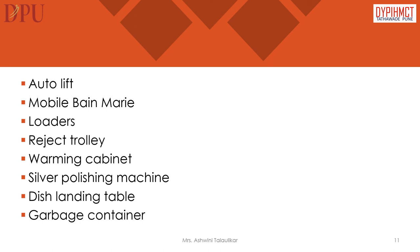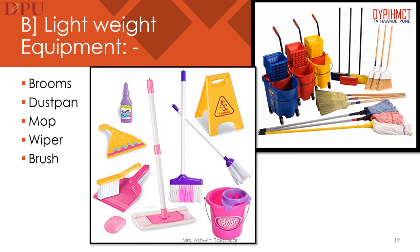Temperature for sterilization of cutlery and crockery is 170°C to 180°C. Door type dishwasher can handle 810 to 1875 dishes per hour. A single tank conveyor can handle 4500 to 5650 dishes per hour. A double tank conveyor can handle 8500 to 12000 dishes per hour. A flight type dishwasher can handle 6750 to 34000 dishes per hour — most flight units contain pre-wash, power wash, power rinse, and final rinse cycles. pH value of water should be below 10.2. Lightweight equipment used in kitchen stewarding includes: brooms, dust pan, mop, wiper, and brush.